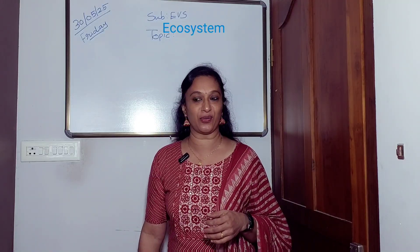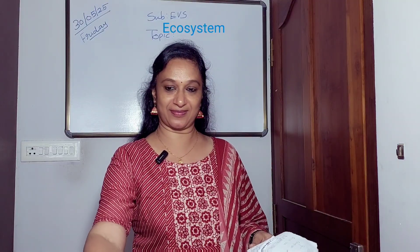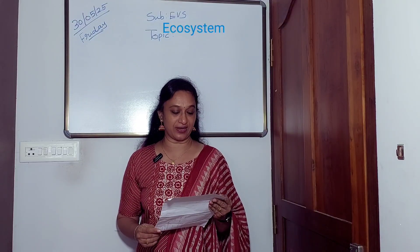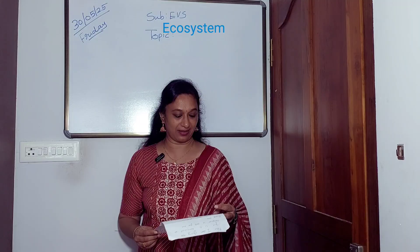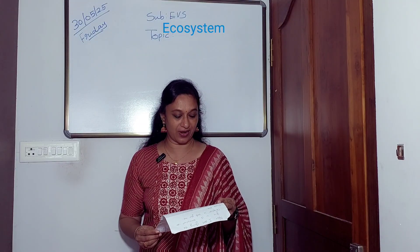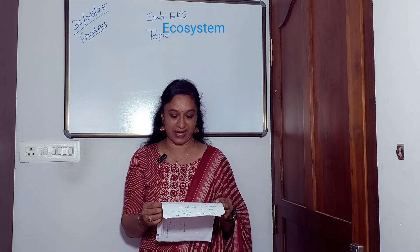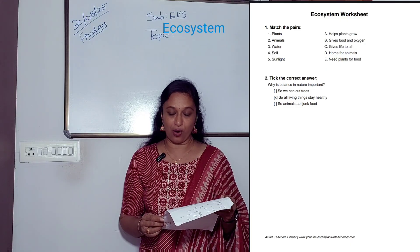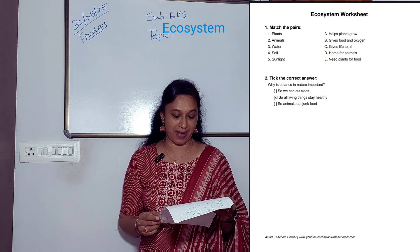Now I am going to give you a worksheet. Complete it and give it to me. First one — match the pairs. One: plants. Two: animals. Three: water. Four: soil. Five: sunlight. A: helps plants to grow. B: gives food and oxygen. C: gives life to all. D: home for animals. E: needs plants for food. Match with the correct pair.